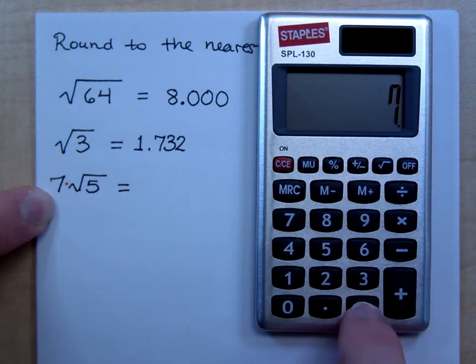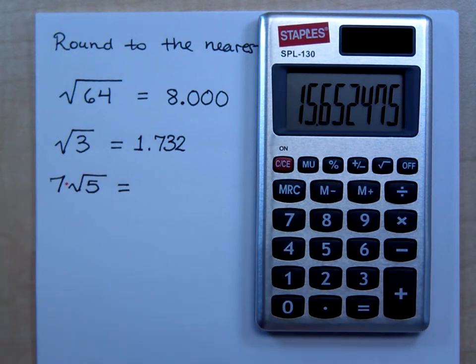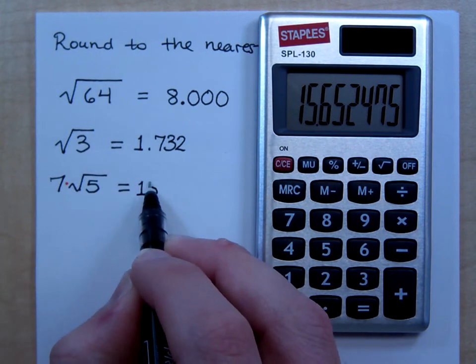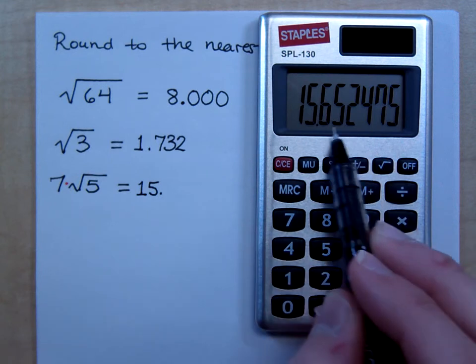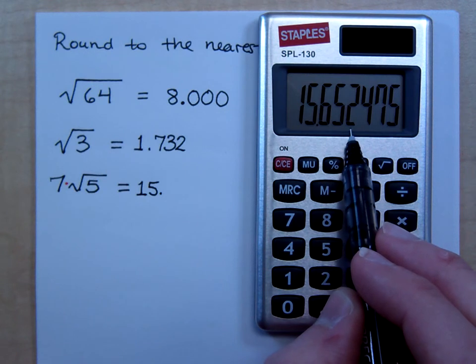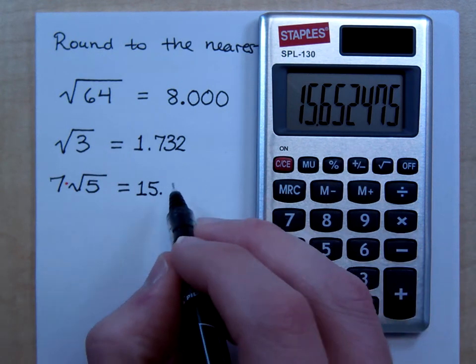So here's this number, but I need to multiply this times 7. Times 7. And I've got this number. Rounded to the nearest thousandth is what? Tenths, hundredths, thousandths. Do I round up or keep it the same? Keep it the same. So, 15.652.